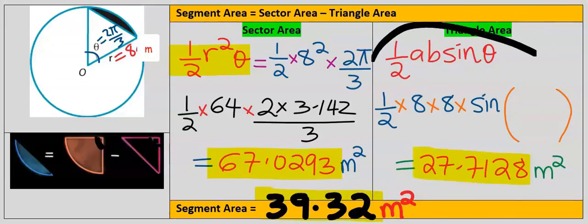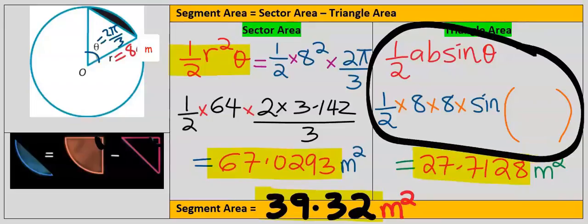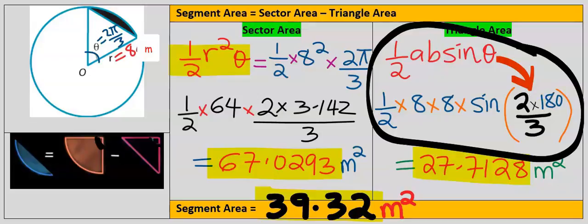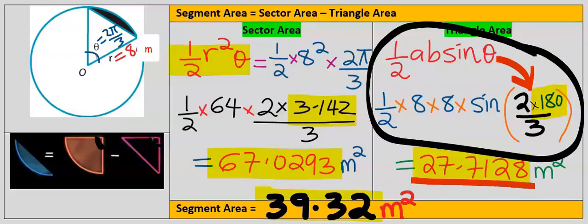Alternatively, in calculating the area of the triangle we can keep the angle in radians without conversion. Note that π inside a trigonometric function equals 180, not 3.142, which is π outside a trigonometric function. Because of the presence of the sine function, π will be 180, and the answer will still remain the same. The segment area will also remain unchanged.